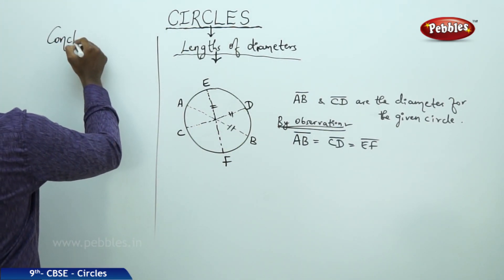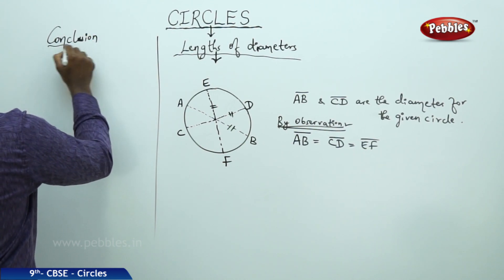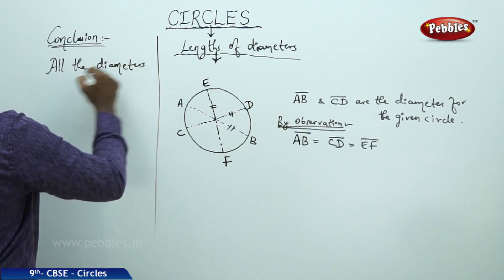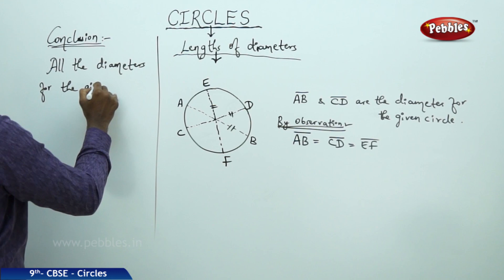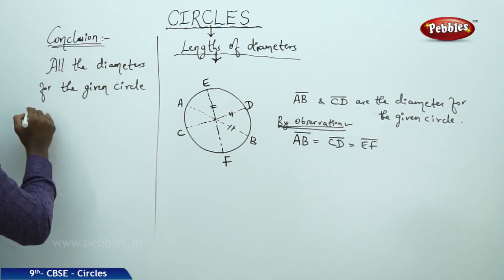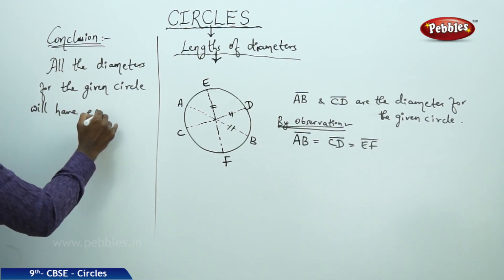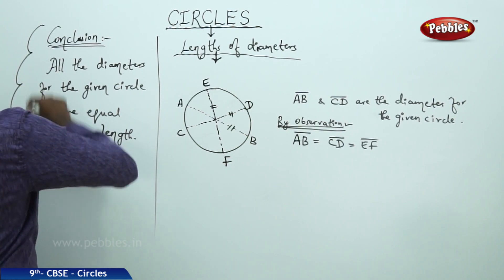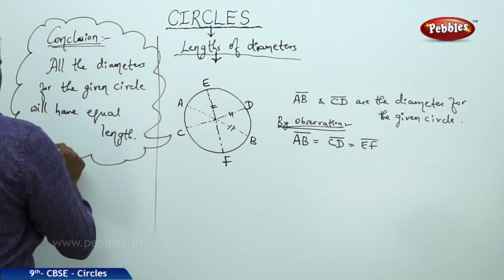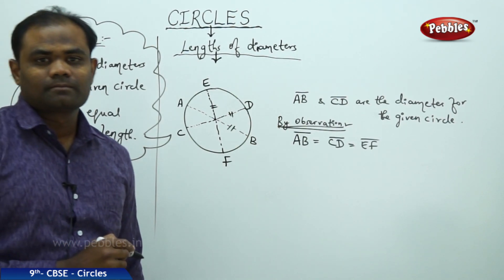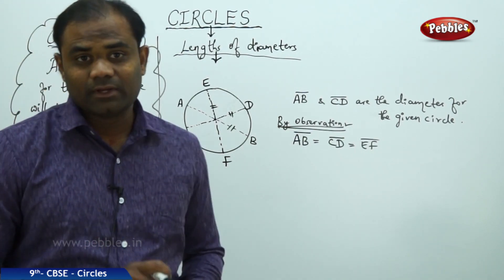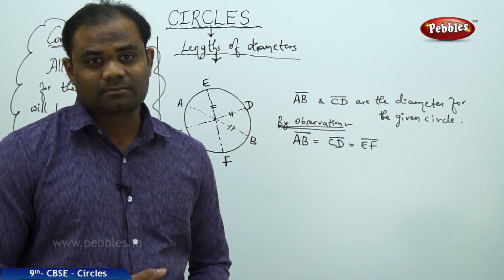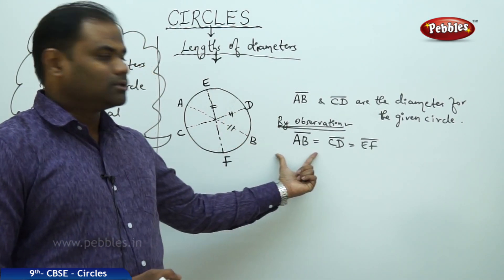The conclusion: all the diameters for the given circle will have equal length. That is how we conclude for the diameters connected with lengths — length of AB equals length of CD equals EF.